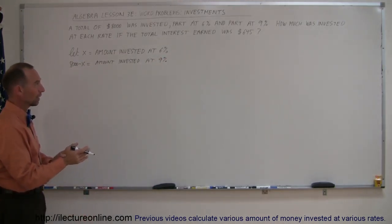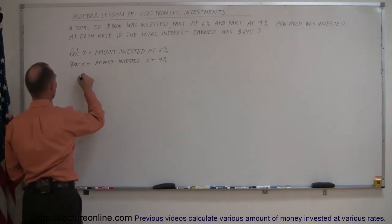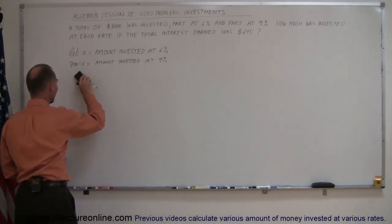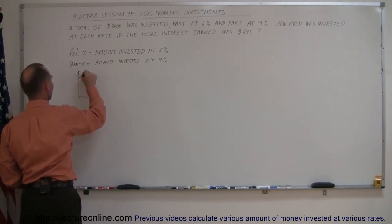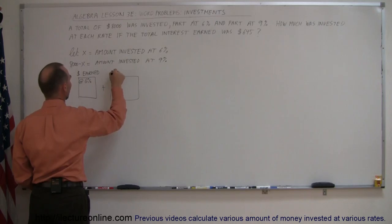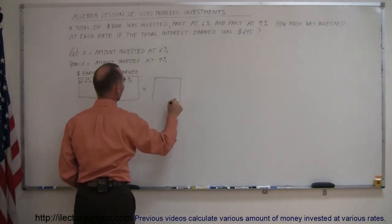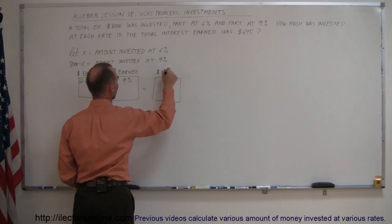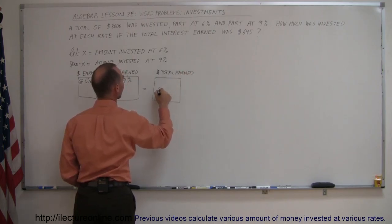And since they tell us what the total amount of money earned was, $645, which means that the dollars earned at 6% plus the dollars earned at 9% must equal the total dollars earned. And we were told that was $645.